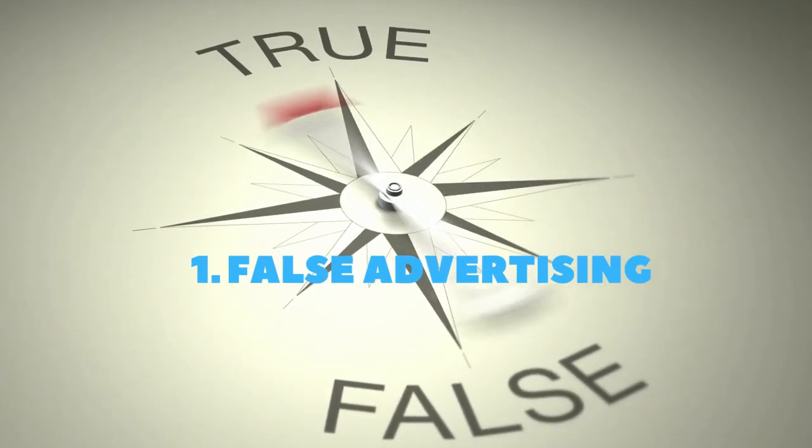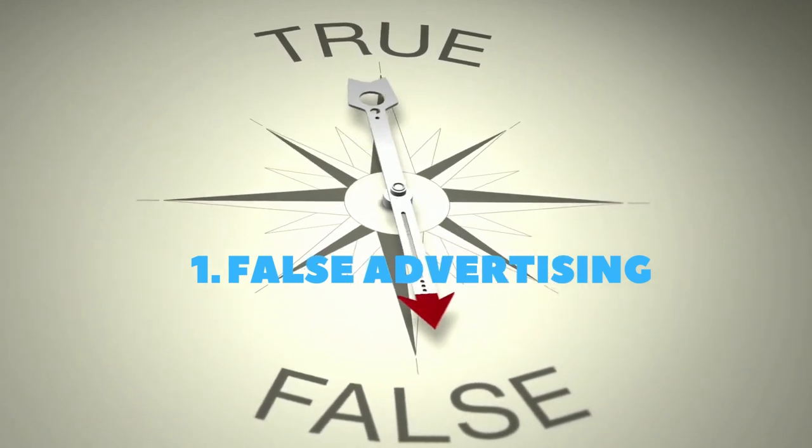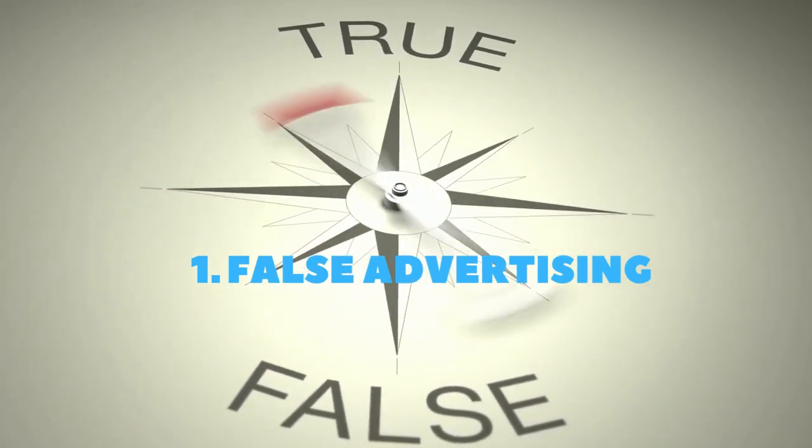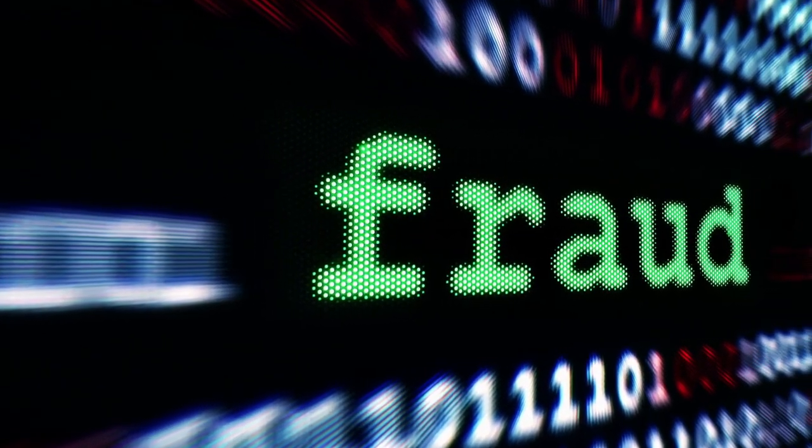The first unethical business practice we will cover is false advertising. You have all seen commercials on TV or ads online that have some pretty outrageous claims. In a lot of cases, it is mere puffery, which is just a fancy legal term for exaggerated or false praise. For example, claims that a product is the best in the world or is heavenly. People have become so accustomed to this type of advertising that it isn't too problematic. But when a company makes factual claims about their products that turn out to be false, that can rise to the level of fraud.